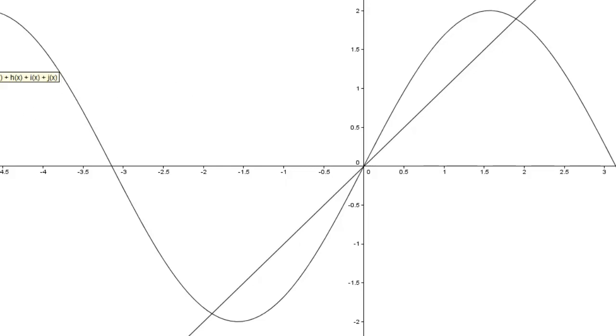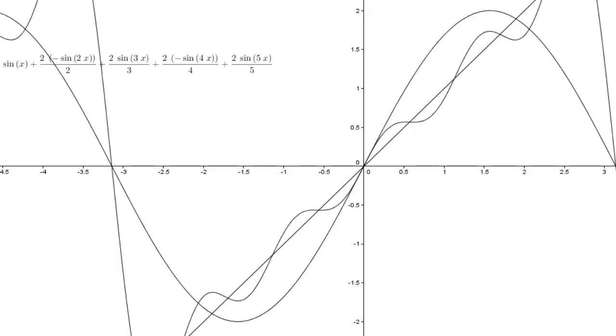Now let us approximate using the first 5 terms of the sine series. And you can see that it is giving us a more accurate approximation as compared to only 1 term.